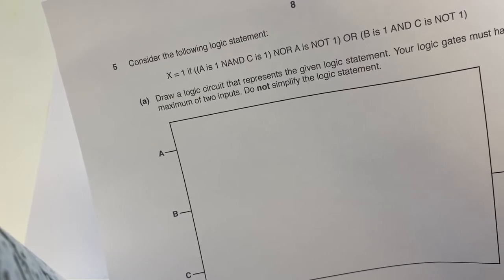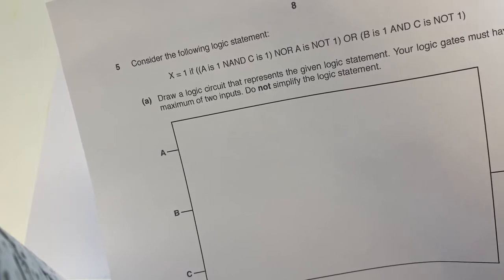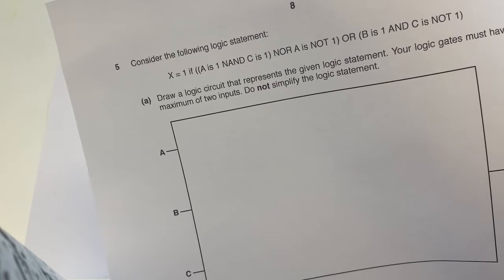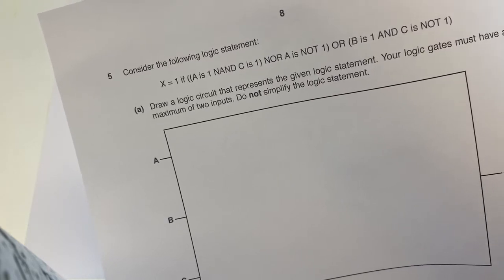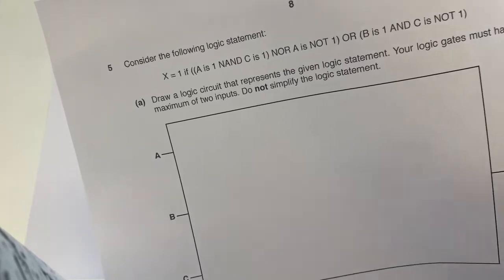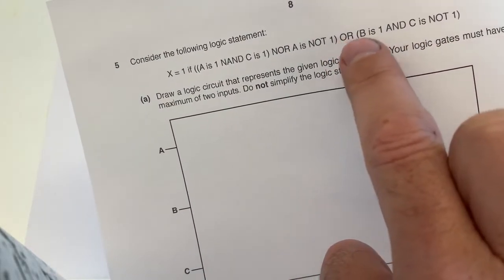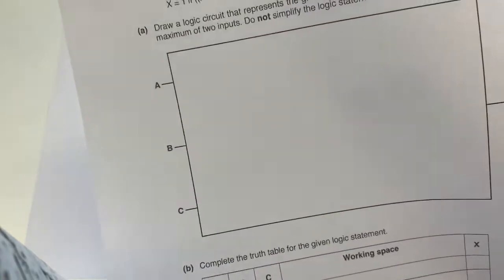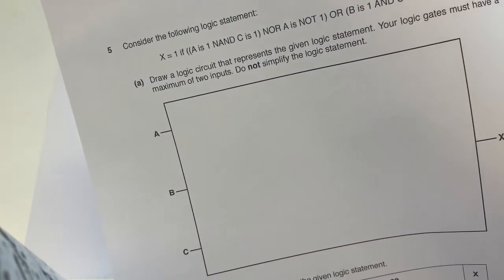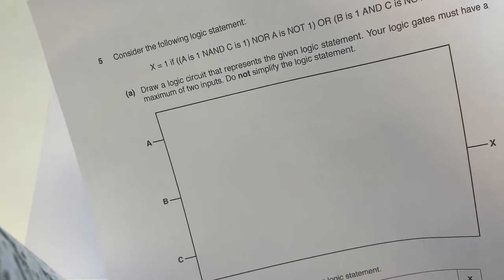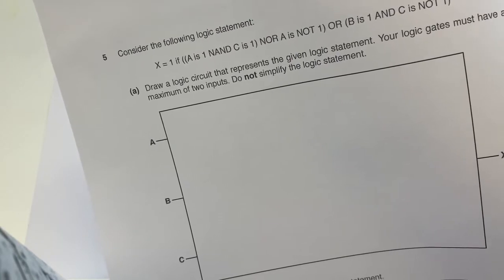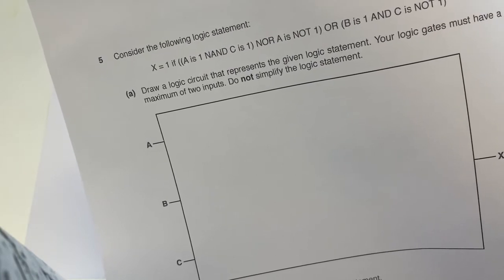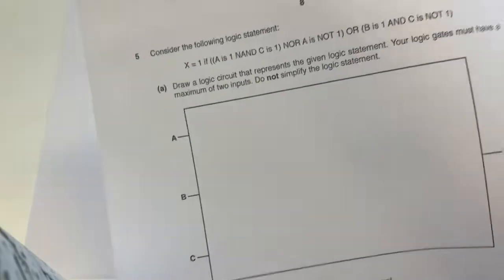...A is one NAND C is one NOR A is not one - that's the first collection, or B is one and C is not one. Then the question says: draw a logic circuit that represents the given logic statement. Your logic gates must have a maximum of two inputs. Do not simplify the logic statement.